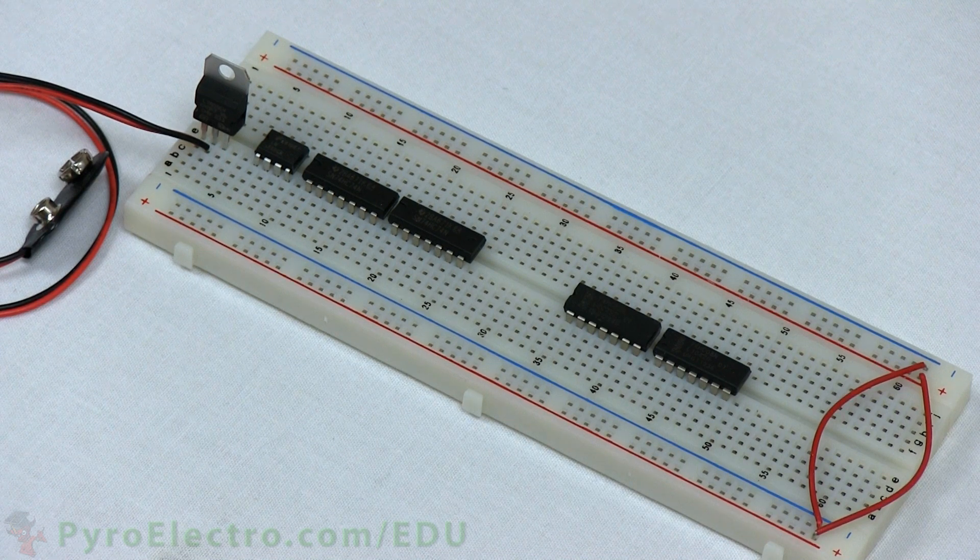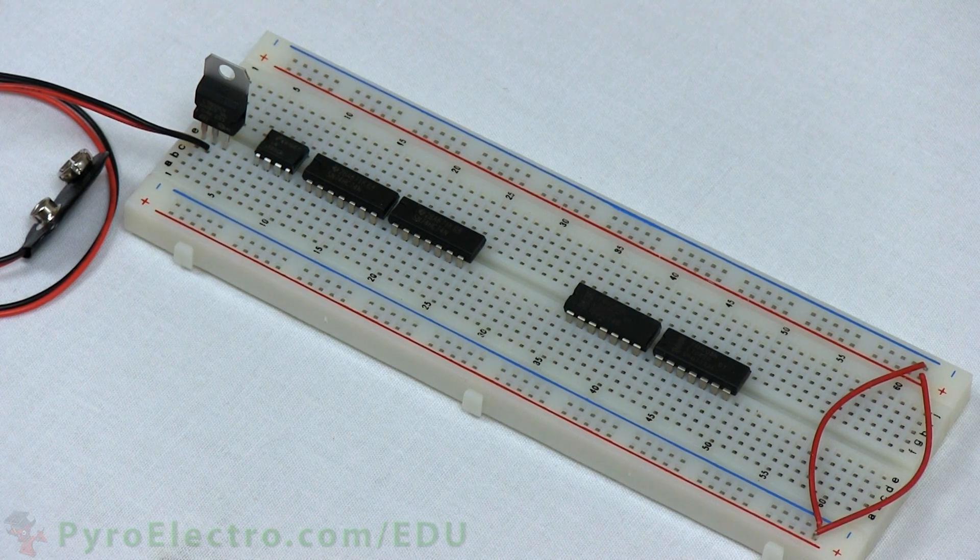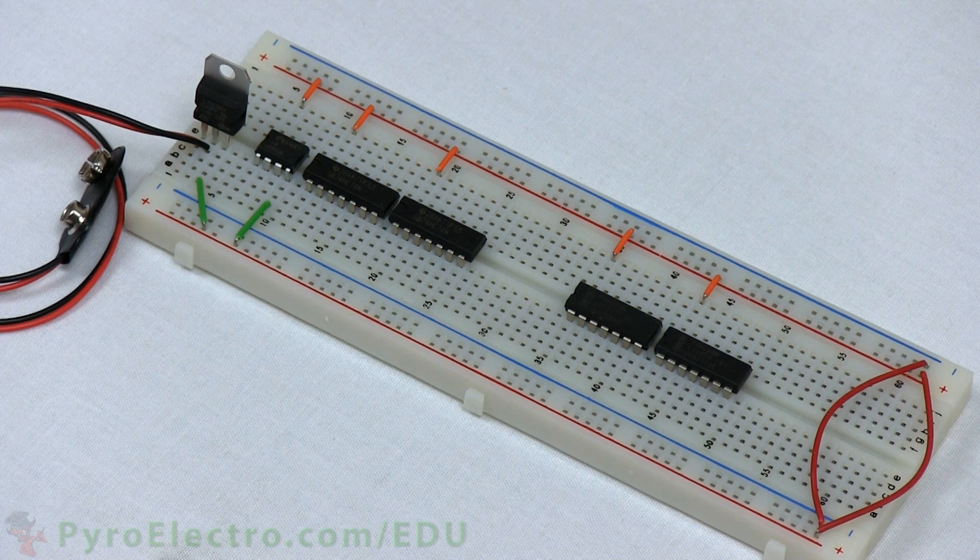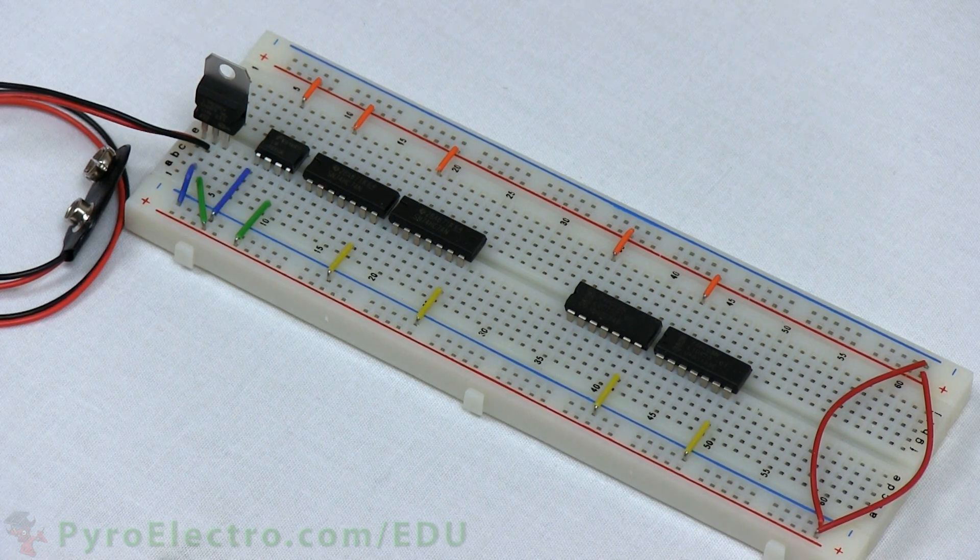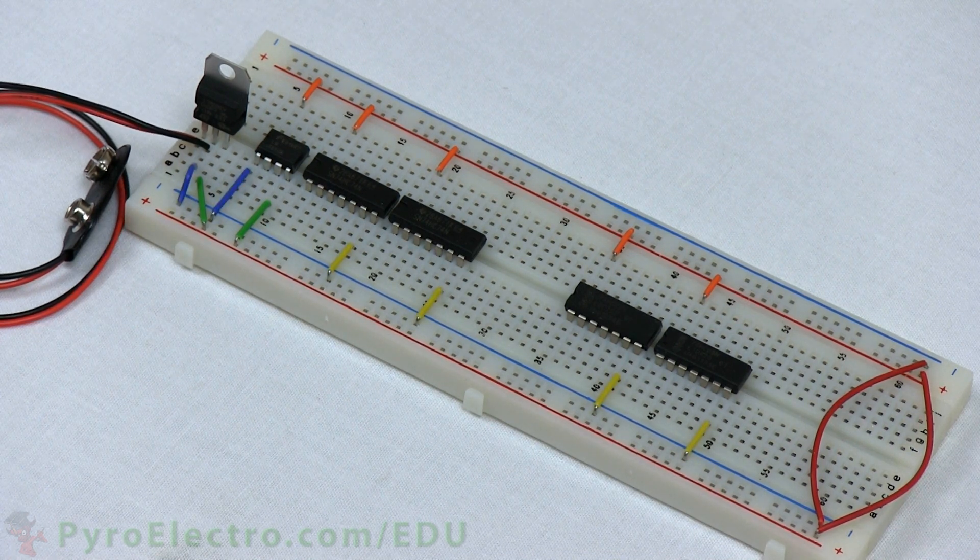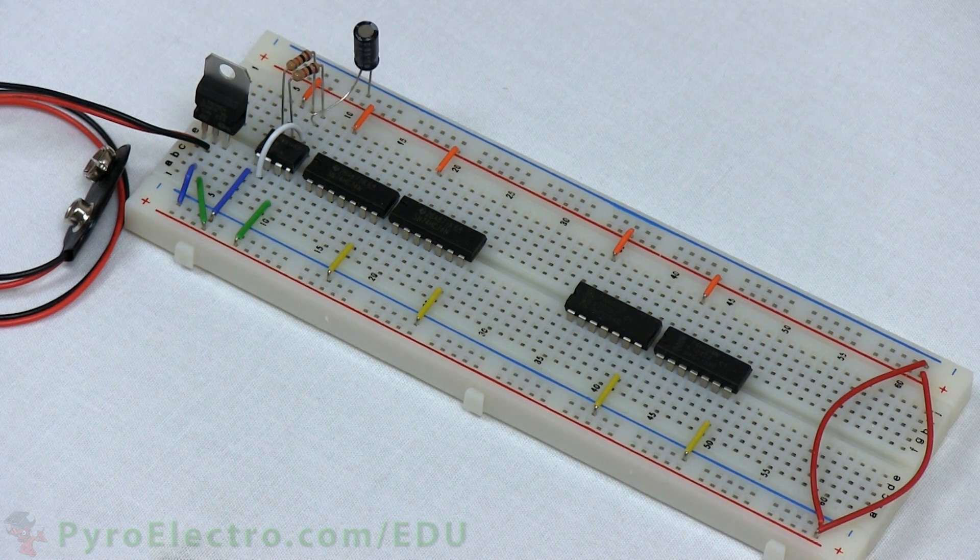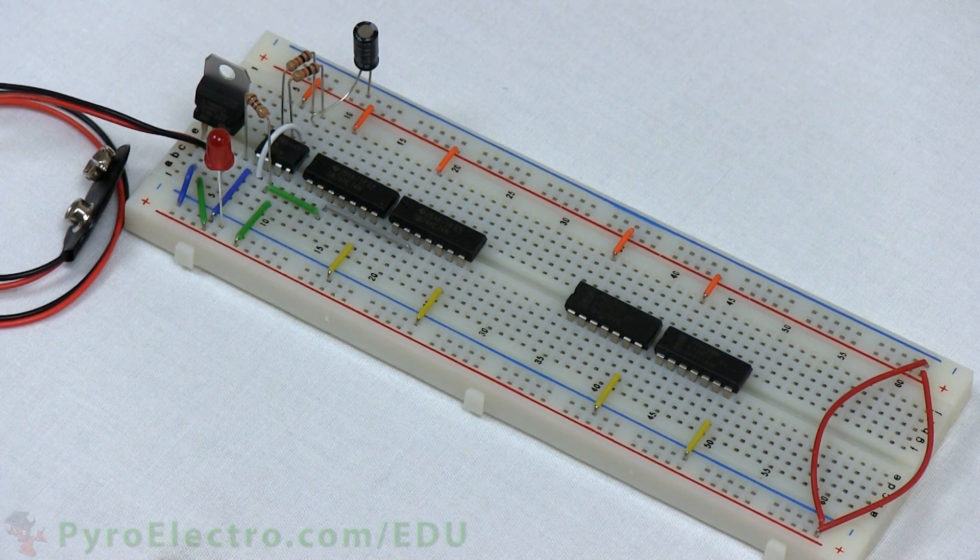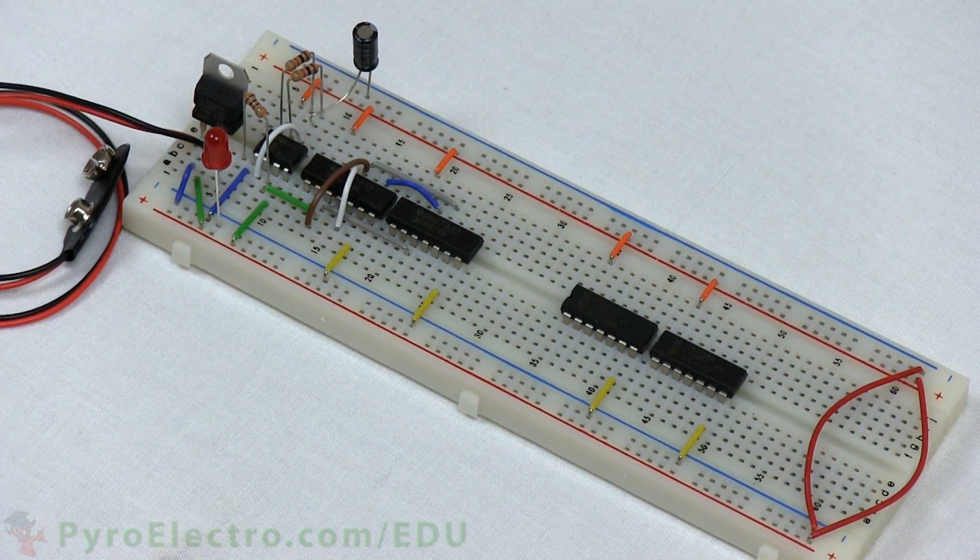The two breadboard bus lines are connected together with two red wires. All of the power connections are made and then all of the ground connections are made. From this point, follow the schematic carefully and refer to our time lapse currently playing to build the circuit yourself.